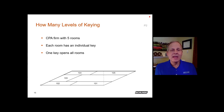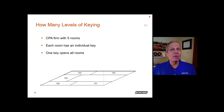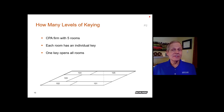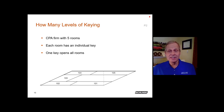Let's look at a single-floor building — a CPA firm with five individual rooms. Each room will have its own change key and there will be one key that opens all the doors. Given this layout, how many levels of keying would we need? A simple two-level system would suffice: one master key fitting all the doors and change keys operating the individual offices.